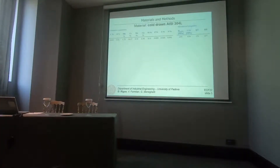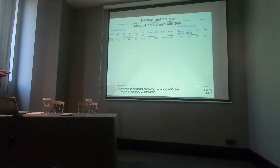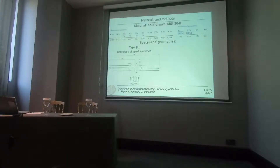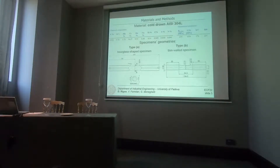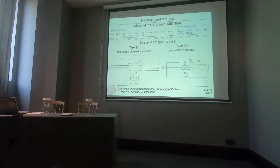For doing this, we used the same material, a stainless steel, whose chemical composition and mechanical properties are recorded in the tables. We produced two types of specimens. The first is an hourglass-shaped specimen used for bending and torsional multi-axial fatigue tests. The second is the type B specimen — a thin-wall specimen with a thickness of 1.5 mm at the net cross-section.